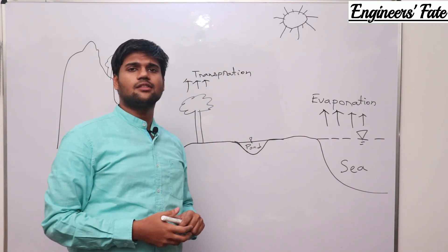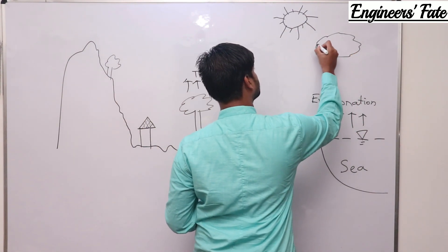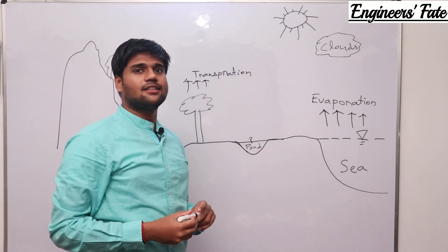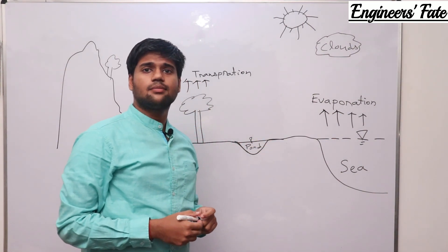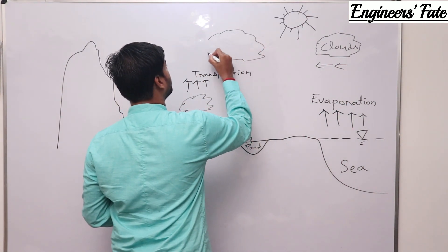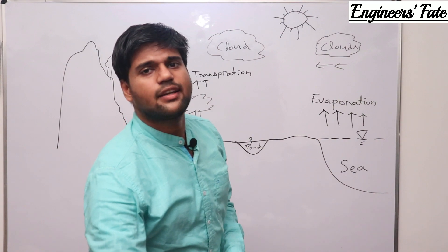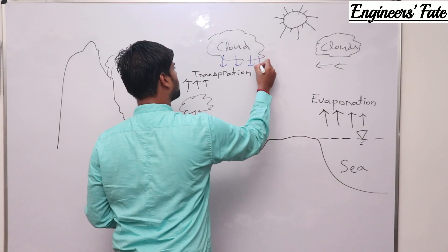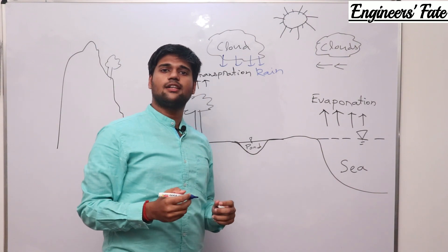Due to evaporation and some amount of transpiration, clouds are formed. That doesn't mean rain will occur at this same place — clouds are formed and then the wind carries them. Due to the speed of the wind, clouds move, and at last rainfall takes place. The term rain is also known as precipitation.